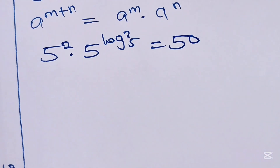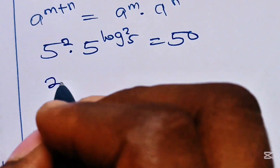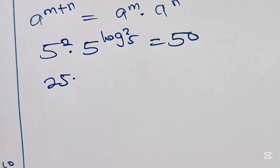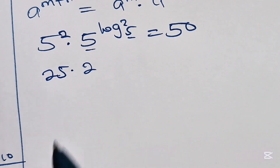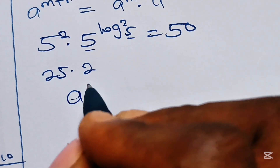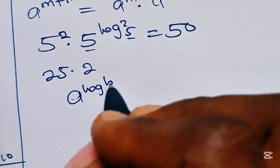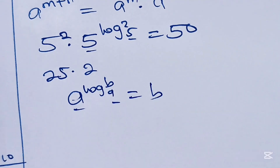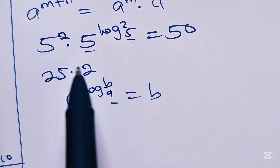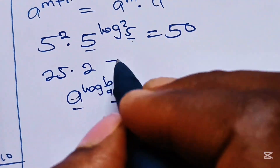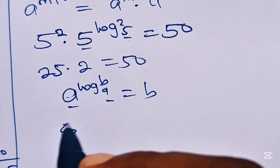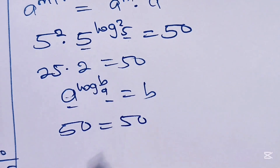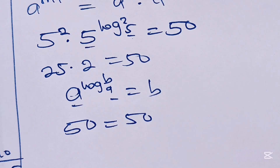5 to the power of 2 is 25. For the remaining part, when you have a to the power of log b base a, and the base matches, this equals b. So 5 to the power of log 2 base 5 equals 2. Therefore we have 25 multiplied by 2 equals 50. The left-hand side equals the right-hand side, which proves that we are correct. Thank you so much for watching, bye!